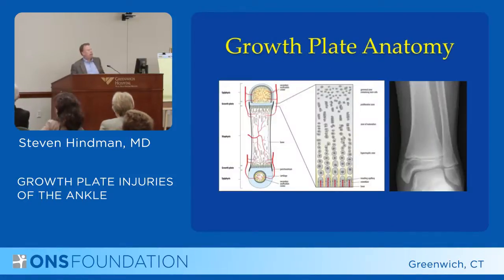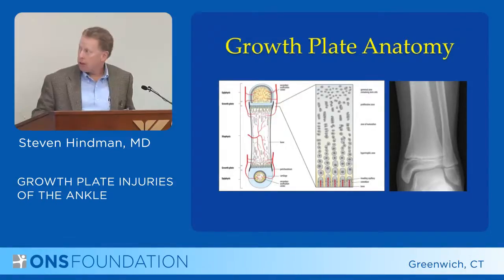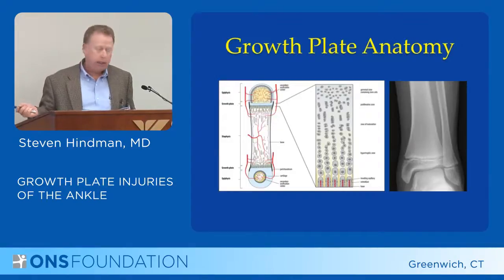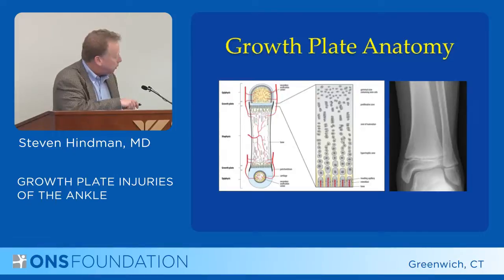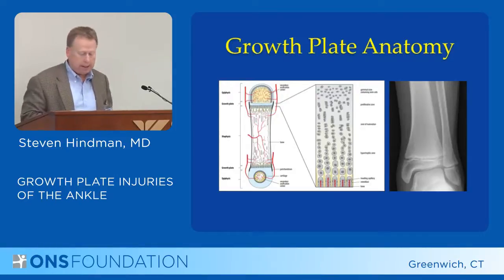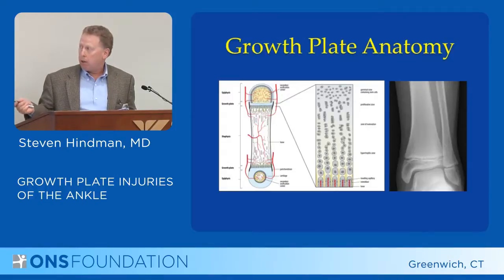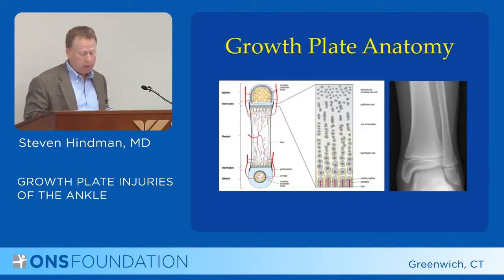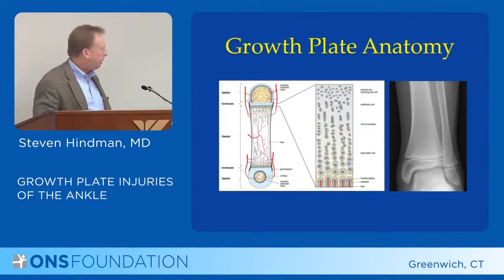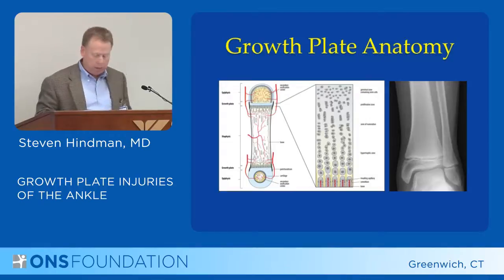Here we go again with growth plate anatomy. Looking at an ankle x-ray, this dark line is a growth plate, with the epiphysis distal to that. This is the growth plate of the fibula as well, so we have two growth plates like in the radius and ulna. You see again a prototypical bone with the cartilage — a weak spot — and when people twist their ankle, this is a weak point in the bone and prone to injury.